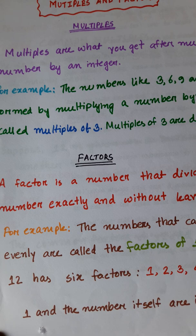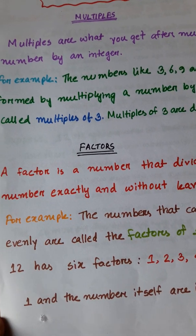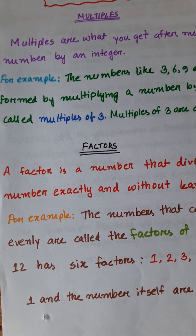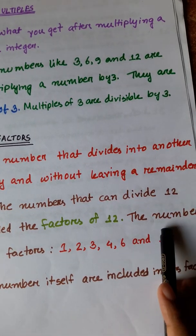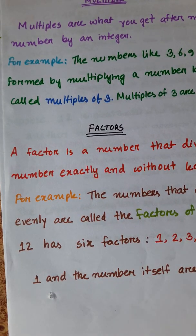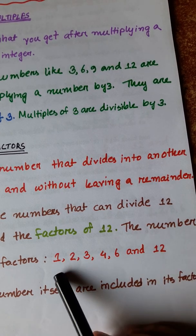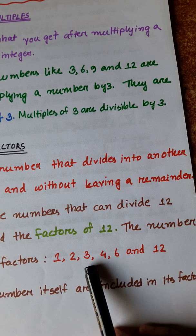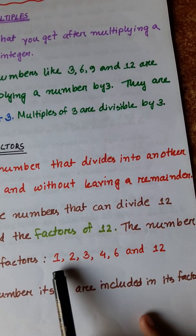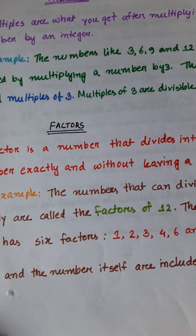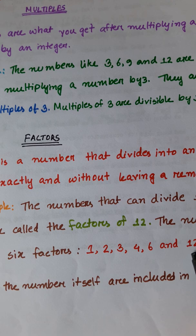For example, the numbers that can divide 12 evenly are called the factors of 12. The number 12 has 6 factors: 1, 2, 3, 4, 6, and 12. Also, 1 and the number itself are always included in its factors.